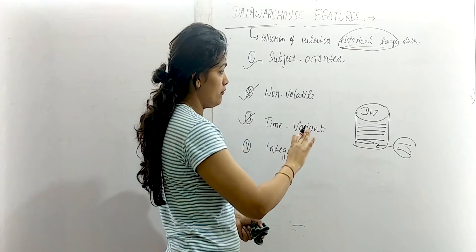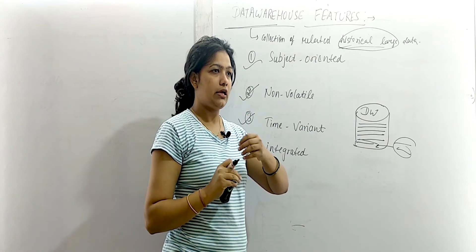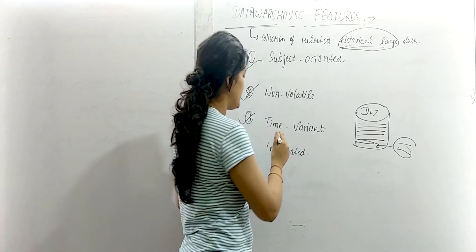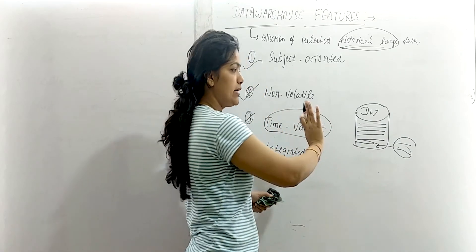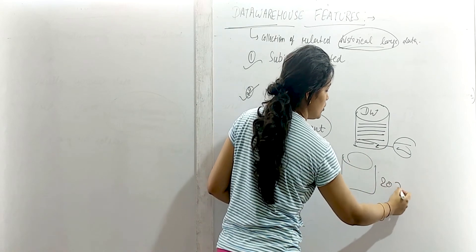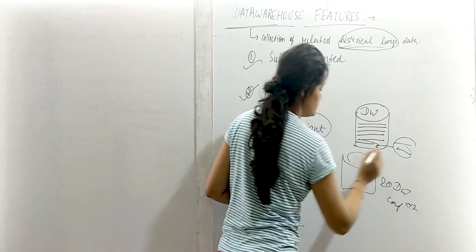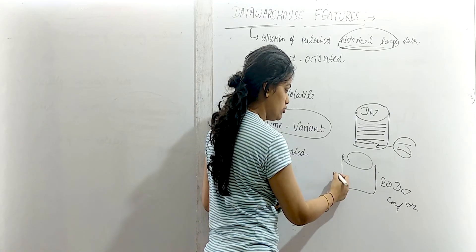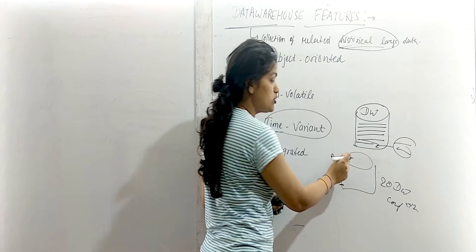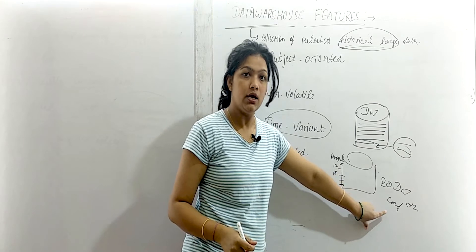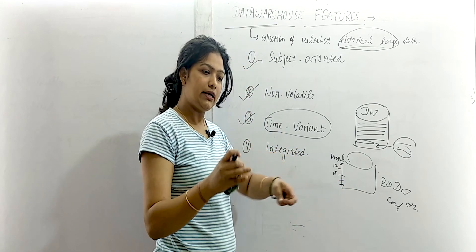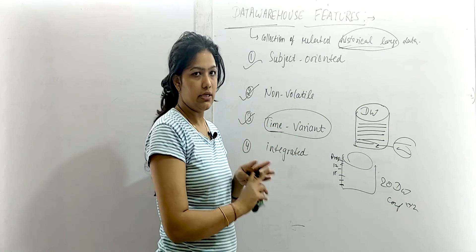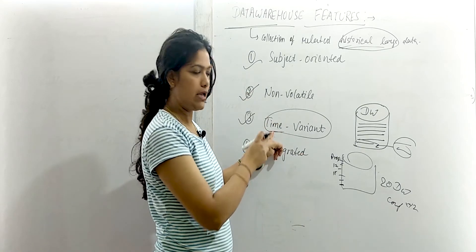The next feature is time variant. Since we are talking about historical data — 20 years old, 10 years old, 5 years old data — time variant means all the data related to time will be in this data warehouse. Suppose this is a 20-year-old data warehouse of a company X, Y, Z. It will have data from 20 years ago, 19 years, 18, 17, and present data also. All the data varying according to time will be in this data warehouse.